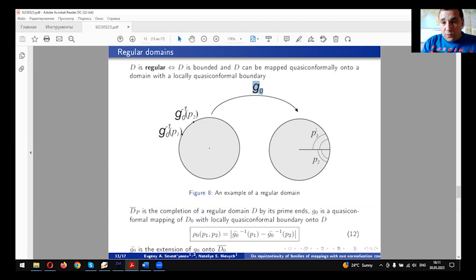If we have two prime ends, say P_1 and P_2, and we have a quasi-conformal mapping G_0 from domain with good boundary, then to any prime ends P_1 and P_2 we have one-to-one correspondence with points in the good domain. We define the metric, the distance between these prime ends, as the Euclidean distance between corresponding points G_0^{-1}(P_1) and correspondingly G_0^{-1}(P_2).